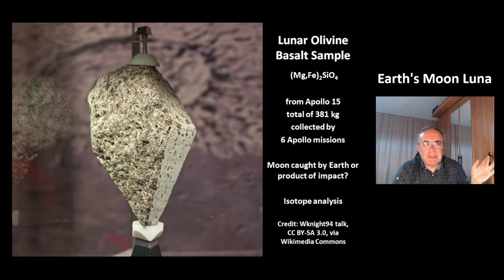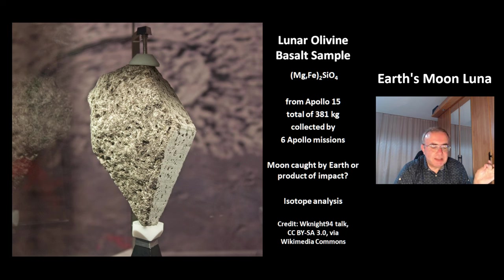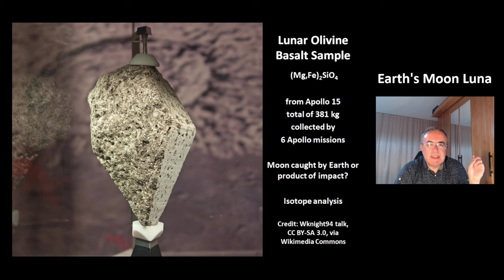This is a sample — the lunar olivine basalt sample. It is magnesium iron silicate from the Apollo 15 mission. There is a total of 381 kg of material that was collected by 6 Apollo missions.